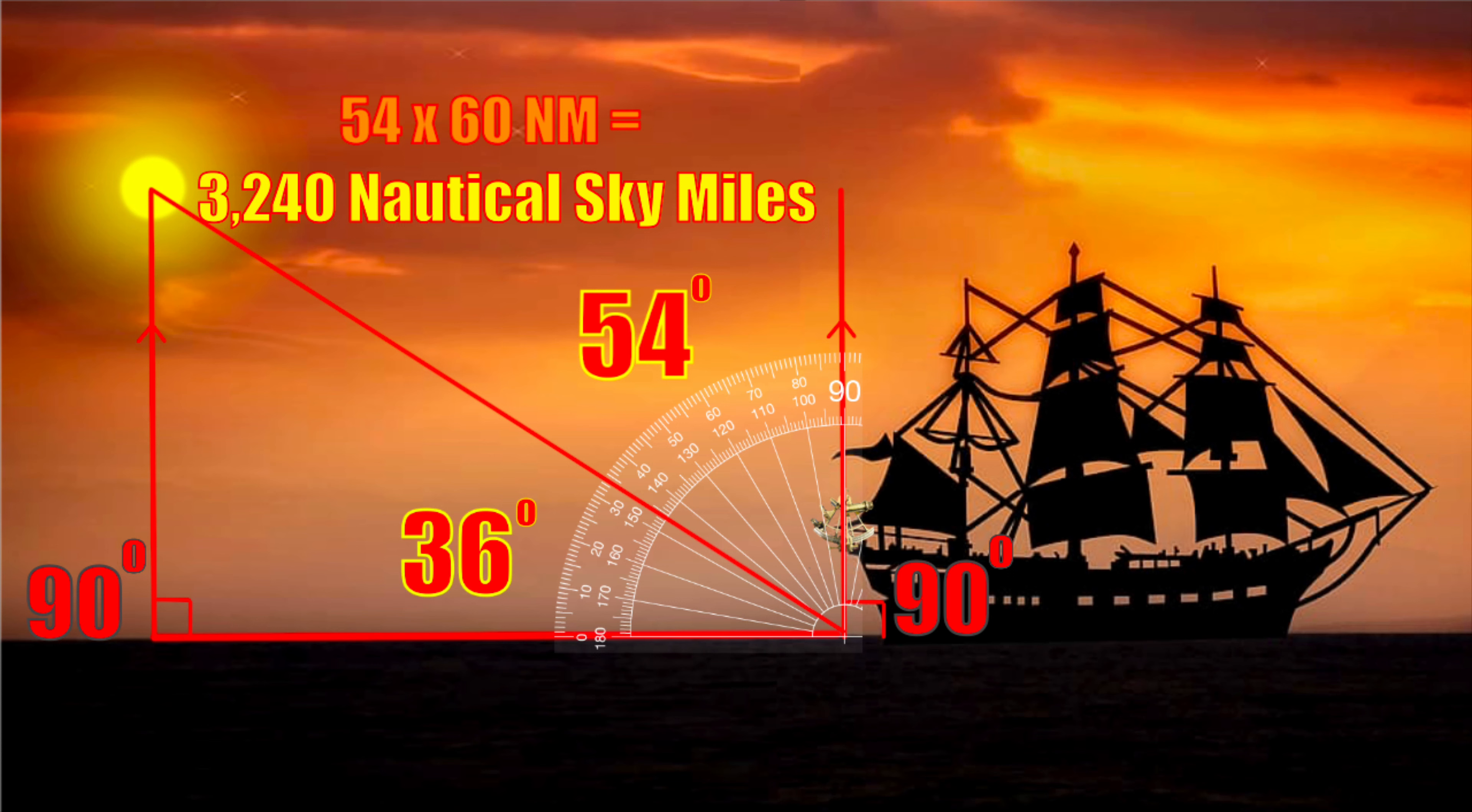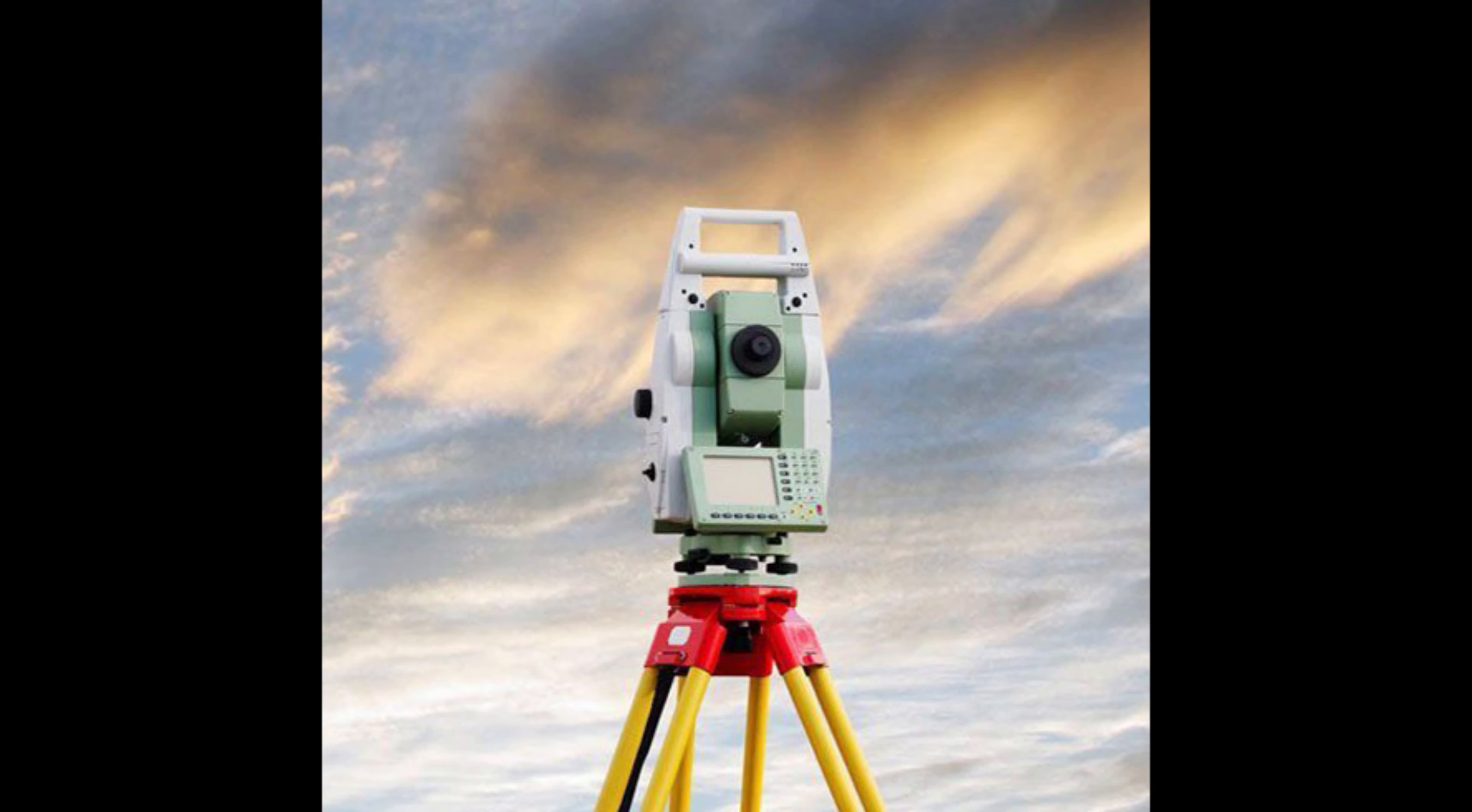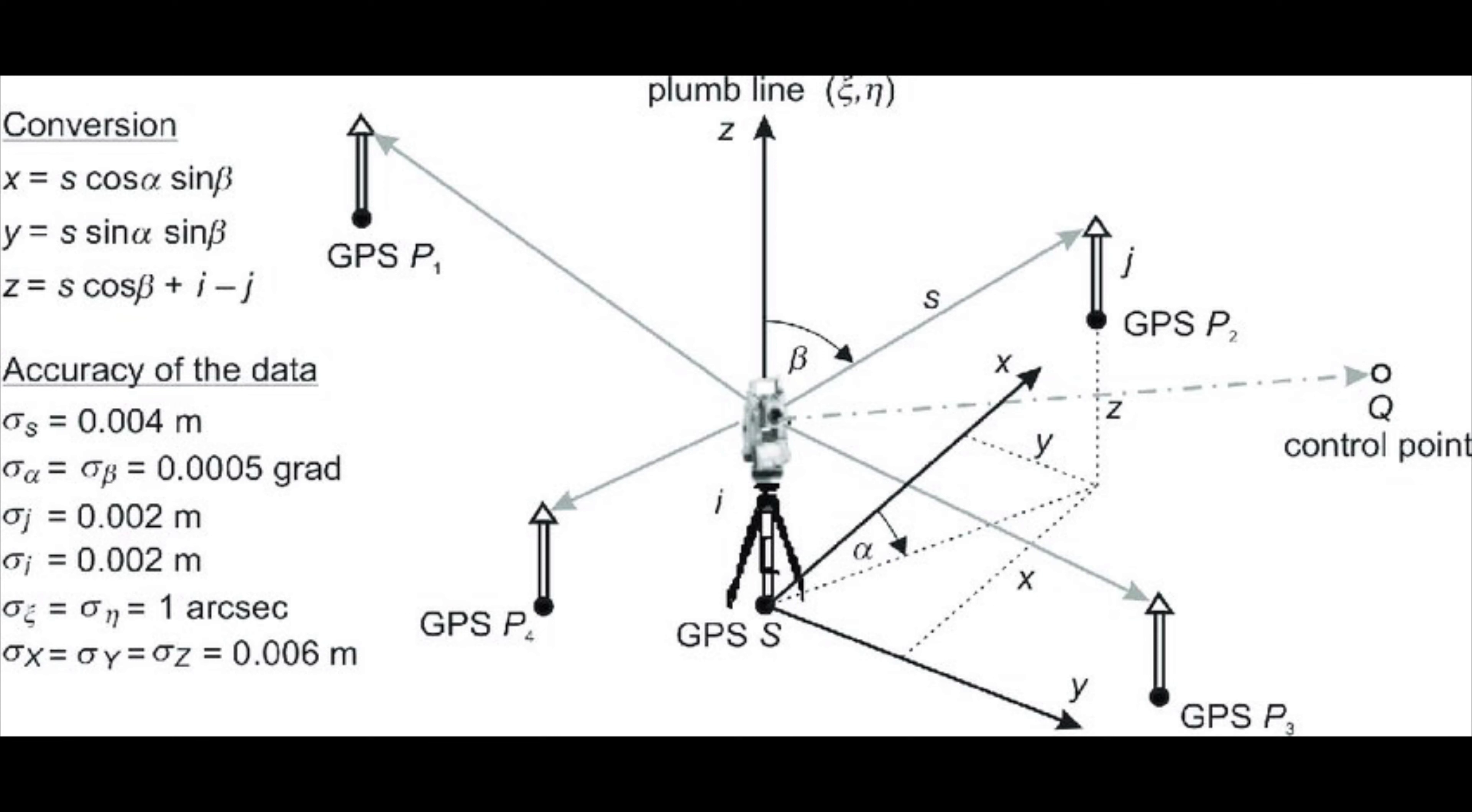So nautical miles have absolutely nothing to do with the surface of a globe earth. They are a measurement of the sky, which are then translated onto the Earth's surface via the zeniths of the observer and chosen celestial object. Surface-based measurement is done in statute miles, as statute miles are not a reference of or determined by the sky. Only nautical miles are a measurement of and determined by the sky.